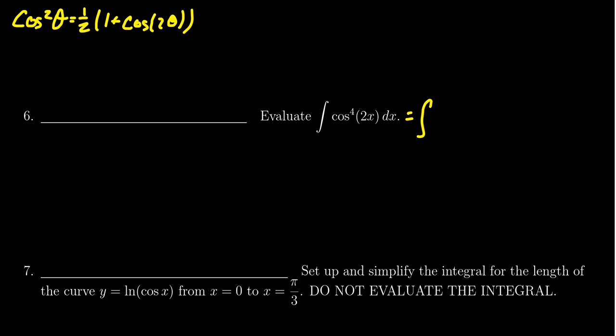So we rewrite this. Upon doing so, we would get 1 half. Well, you have to also realize that, let me step back for a second, you have to realize that this cosine to the 4th is going to be a cosine squared of 2x, itself quantity squared.